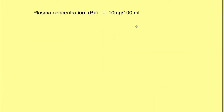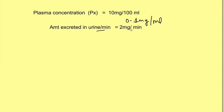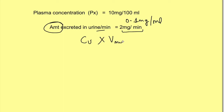To understand how clearance rate is determined, say the plasma concentration of a substance is 10 mg in 100 ml of plasma, that is 0.1 mg per ml of plasma, and the amount of substance excreted in urine per minute is 2 mg per minute. This amount excreted per minute can also be written as the concentration of the substance in urine multiplied by the volume of urine per minute, which is known as the flow rate of urine, since mass equals concentration times volume.